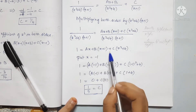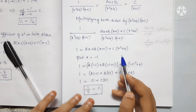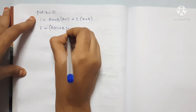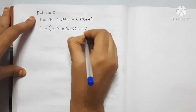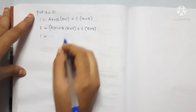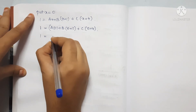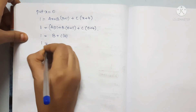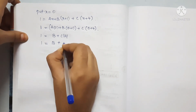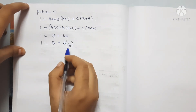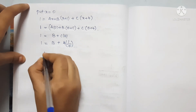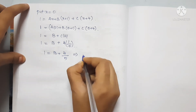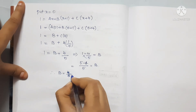Next, we substitute x equals 0 to find B. We get: 1 equals B plus C times 4. Substituting C equals 1/5 gives 1 equals B plus 4/5. Solving, B equals 1 minus 4/5, so B equals 1 by 5.